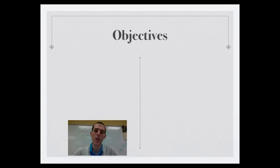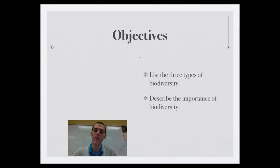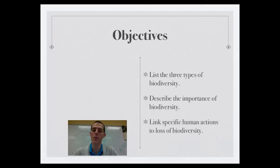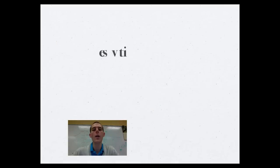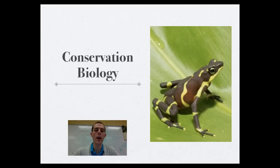By the end of this video, three things to know or be able to do: the first one is to list the three types of biodiversity, the second is to describe the importance of biodiversity, and finally, linking specific human actions to loss of biodiversity.